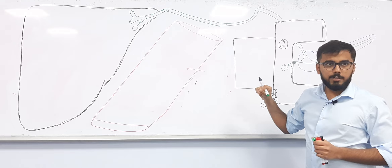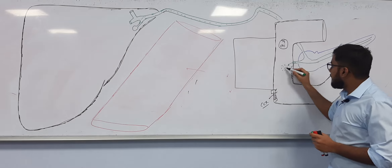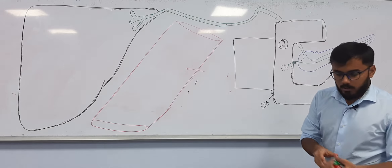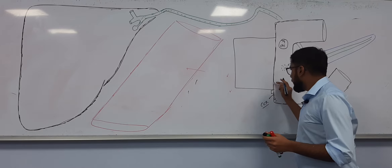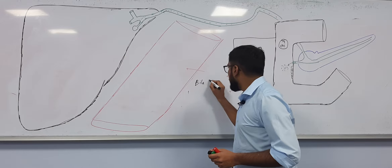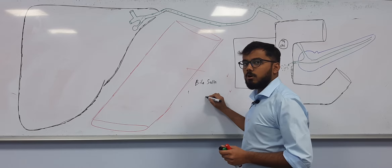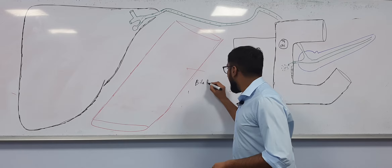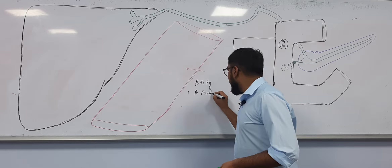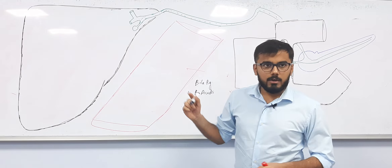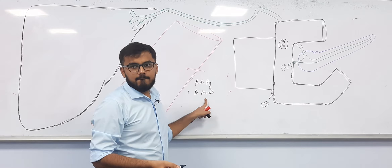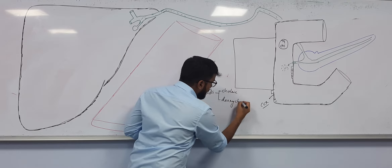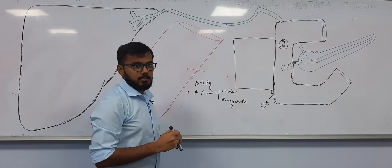Now the topic starts. Bile comes here — tell me what are the components of bile. Bile consists of bile salts, bile pigments like bilirubin and biliverdin, and bile acids. The bile acids are cholic acid and deoxycholic acid — these are very important.